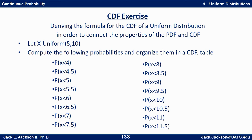So let's let X be uniform from 5 to 10 and then use that graph. Let's get a graph of the PDF and then use that graph, our knowledge of uniform distributions, and our knowledge of areas of rectangles to compute these following probabilities.